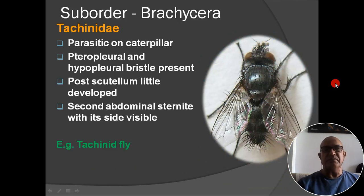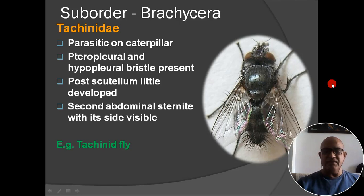Next family: Tachinidae. Parasitic on caterpillars; terro-pleural and hypo-pleural bristles present; post-scutellum little developed; second abdominal sternite with sides visible. Example: tachinid fly.